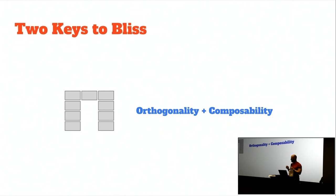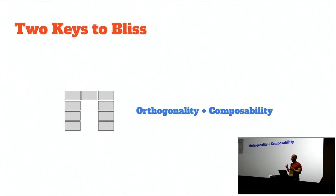Some functional code is better than others — it feels better. It's taken me a while to figure out what makes good functional code so pleasant to work with. I think there are two key ingredients in every really great functional library and API. And I'm going to argue that these two ingredients are orthogonality and composability.